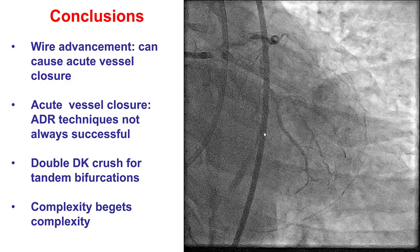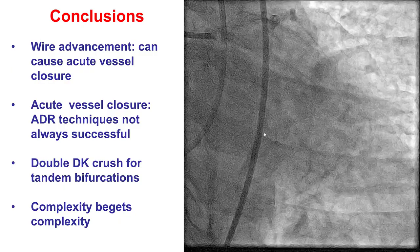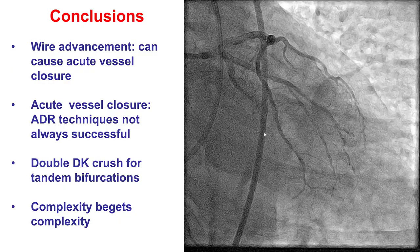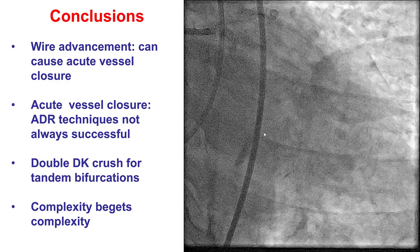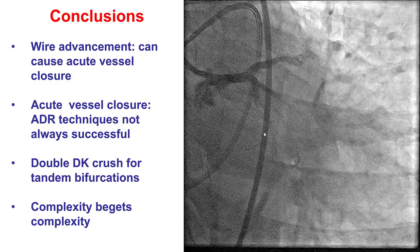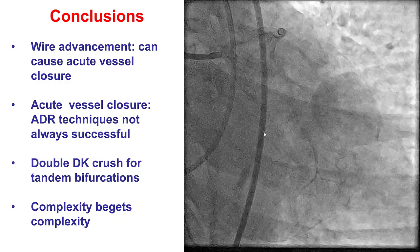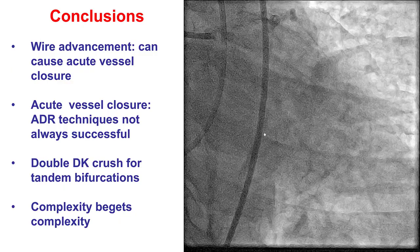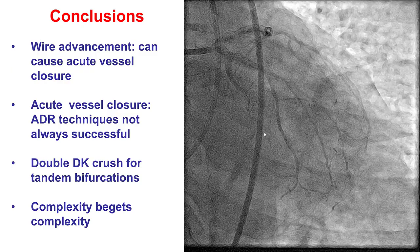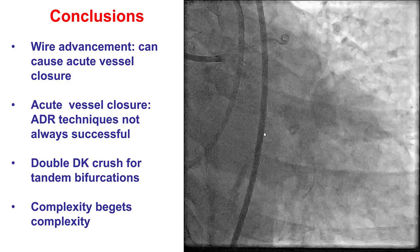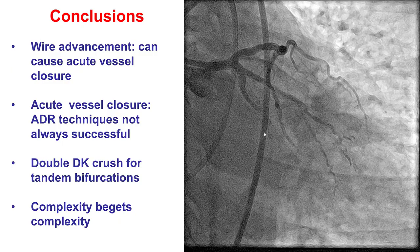Several lessons from this case: the first is that even advancement of a workhorse guide wire can cause dissection, especially for highly stenotic and eccentric lesions in tortuous vessels. When acute vessel closure happens and is due to dissection, the first step is to advance a guide wire, if there is not one already, into the distal true lumen and then stent. Unfortunately, here we were unable to do that.